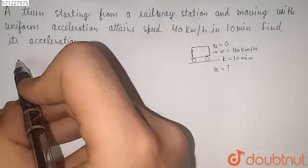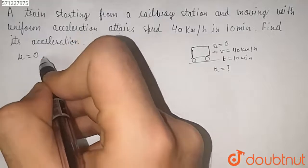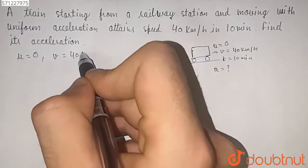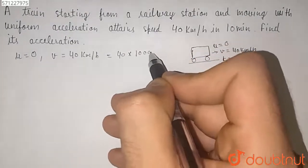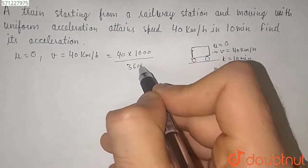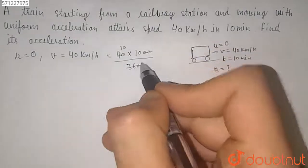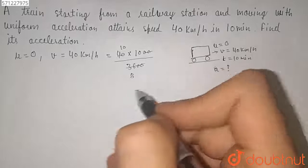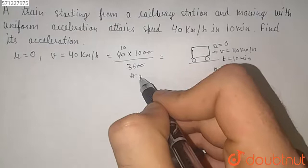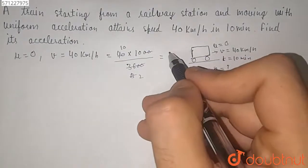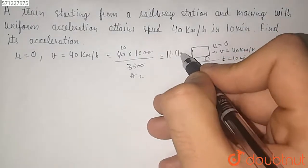So as we know that here we have given u is equal to 0, v is equal to 40 km per hour, so it will be equal to 40 into 1000 over 3600, which is equal to 11.11 meter per second.